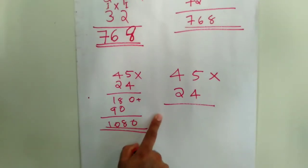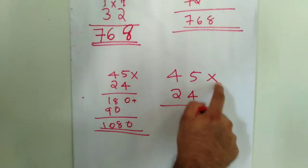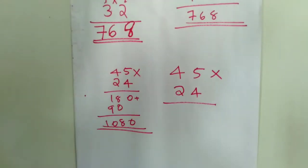Let's do the ixi method. 45 into 24. Let's do the ixi method.